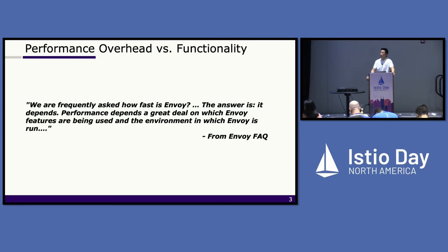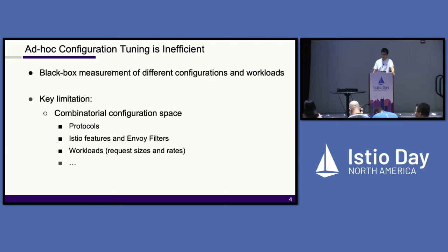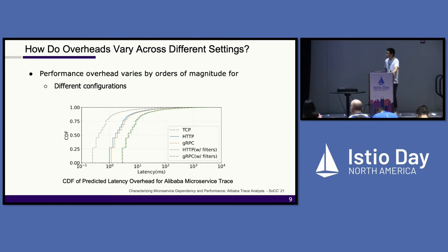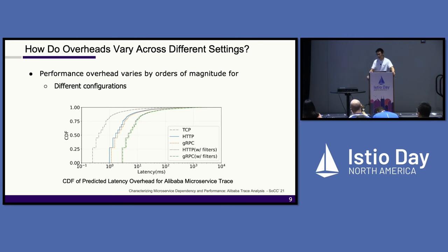Q: In the overhead graph that you showed, how much of it is actual overhead of the sidecar versus how much is due to load, queuing, et cetera? Do you isolate the two? A: The graph shows the overhead of just the sidecar. For latency measurement, we use a very low load generator. So the overhead only shows you the service time — it does not include the queuing delay.